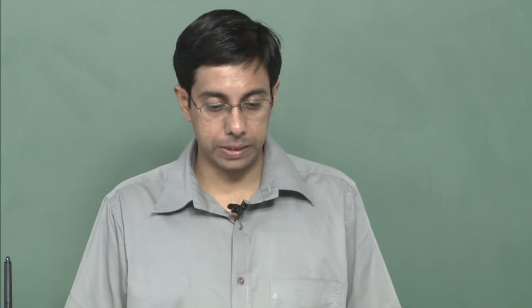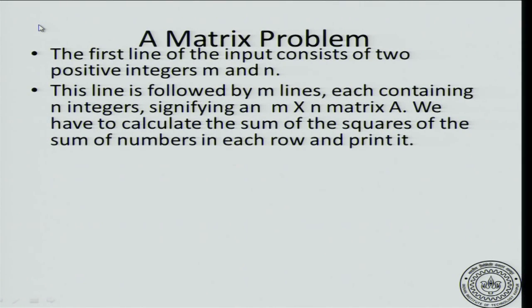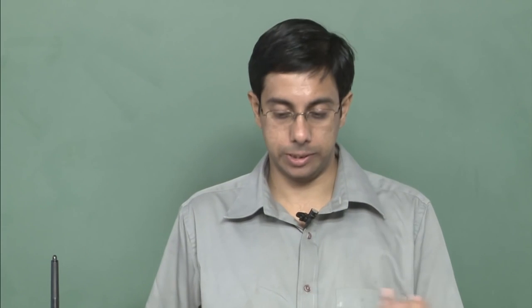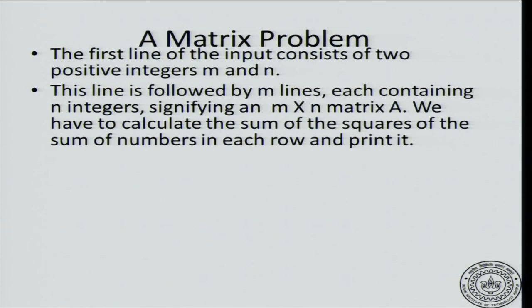In this session, let us look at a matrix problem. The problem is given as follows: you have a bunch of lines of input. The first line consists of two numbers m and n, followed by m lines each containing n integers. This represents a matrix of size m cross n. We have to calculate the sum of the squares of the sum of numbers in each row.